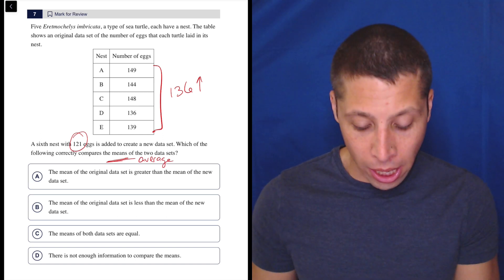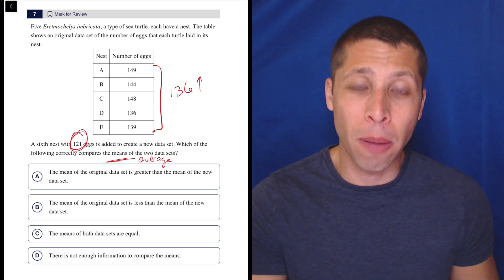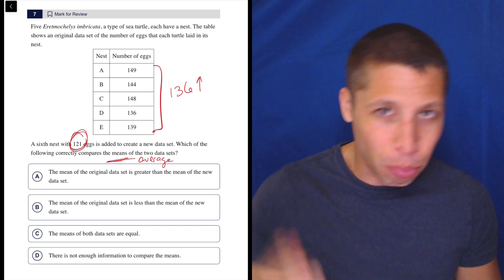I know how averages work. And I know if I add in 121, a much lower number than all the other numbers in the set, it's going to bring the average down.